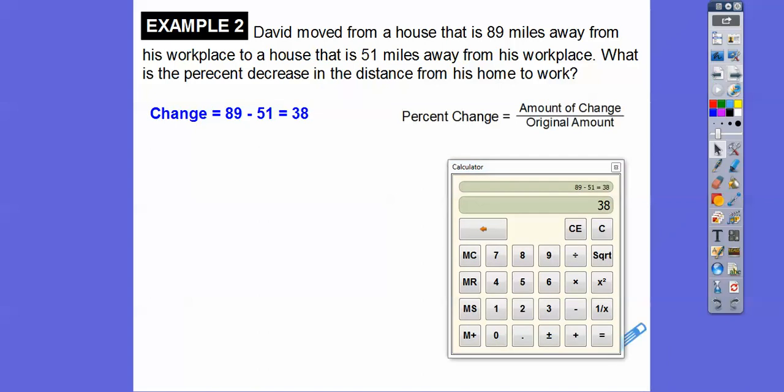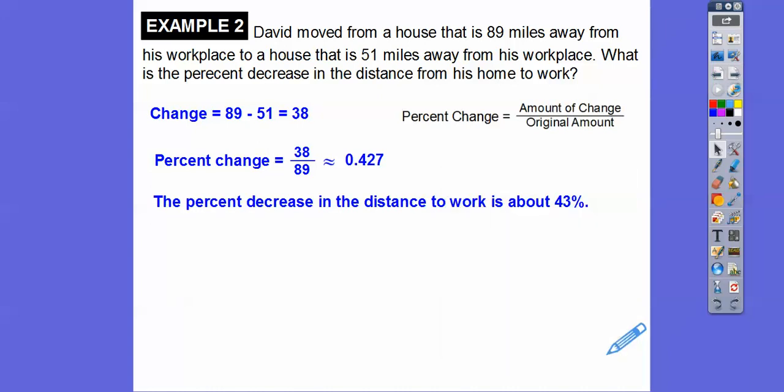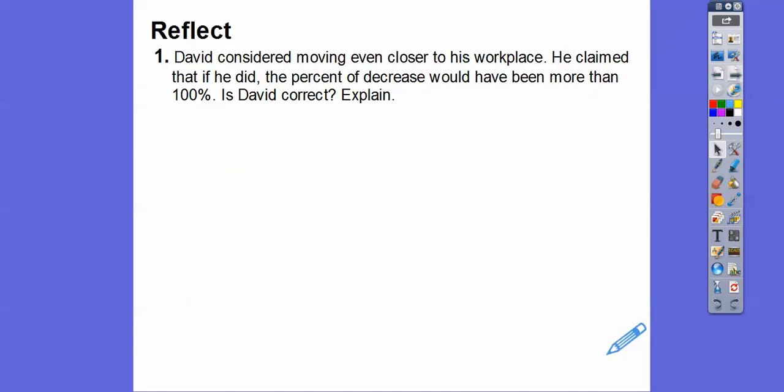So here we go. Now we're going to do 38 divided by the original number. I already got 38 in there. I'm going to hit divided by 89. Hello, Lucy. I see you, sweetie. So when I hit equals, that's going to be the percent. I get about 42.6% and some change right there. So 0.427 if we rounded it. So how much did it decrease? I'm going to say about 43%. So he decreased his distance by about 43%.